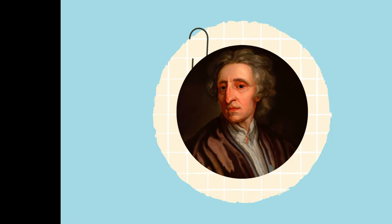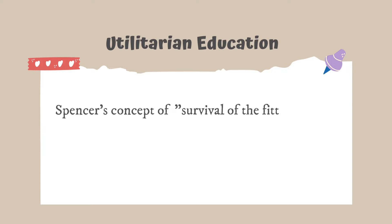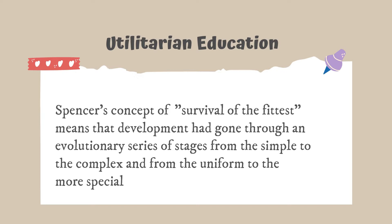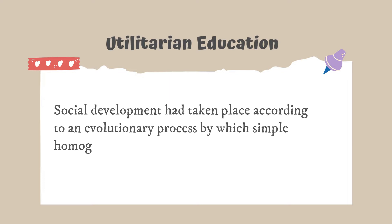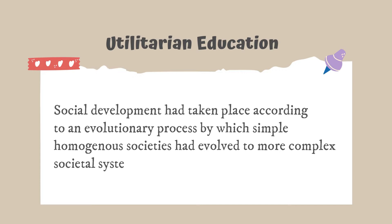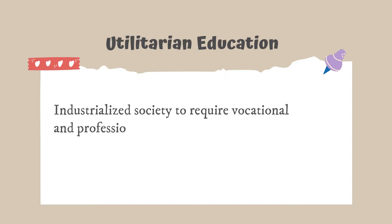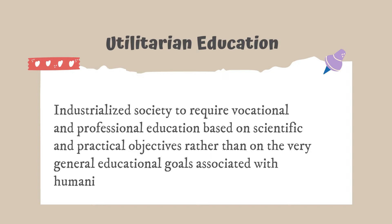The second philosophy is Herbert Spencer's utilitarian education. Spencer's concept of survival of the fittest means that development had gone through an evolutionary series of stages from the simple to the complex, and from the uniform to the more specialized. Social development had taken place through an evolutionary process by which simple homogenous societies evolved into more complex societal systems, moving away from purely humanistic and classical education.